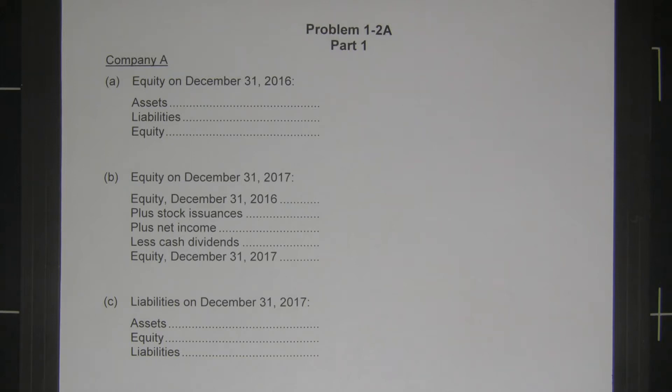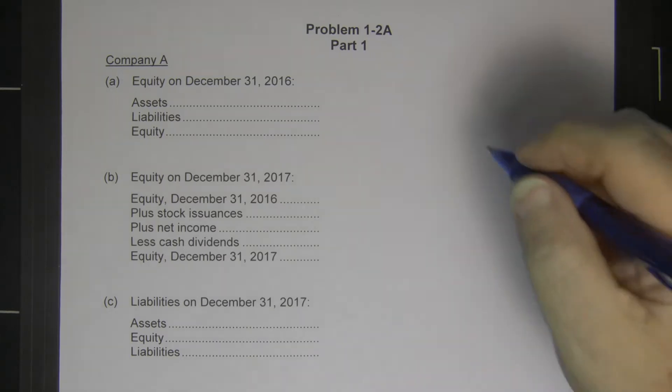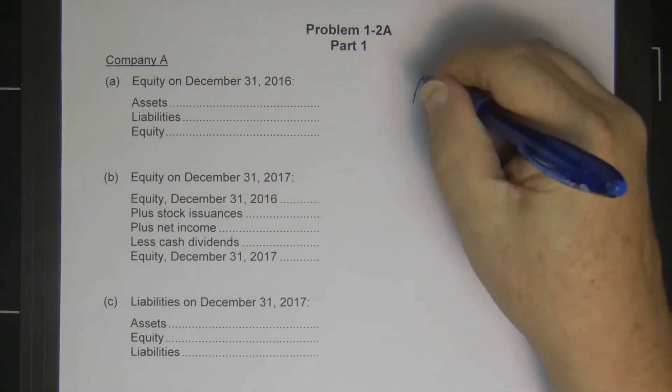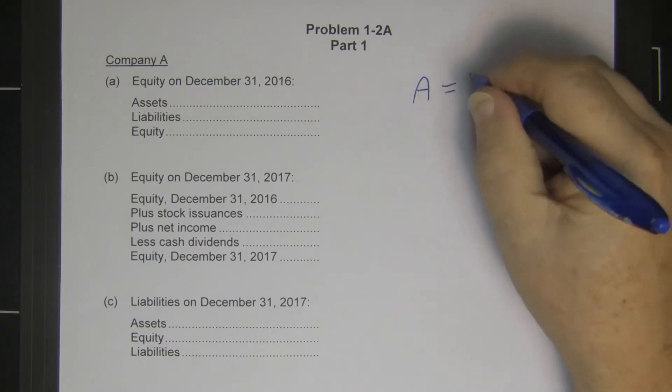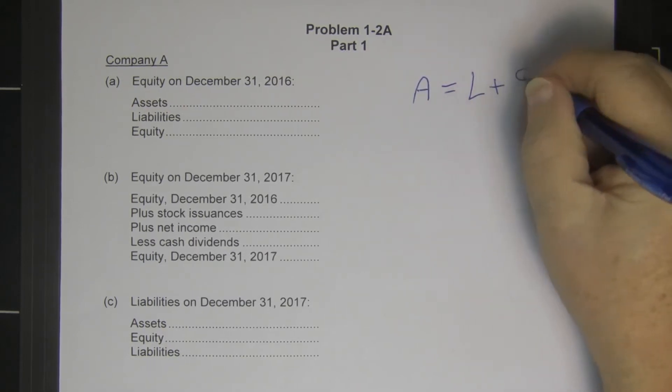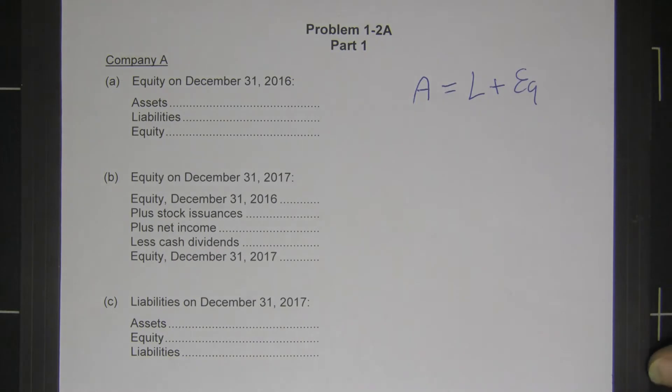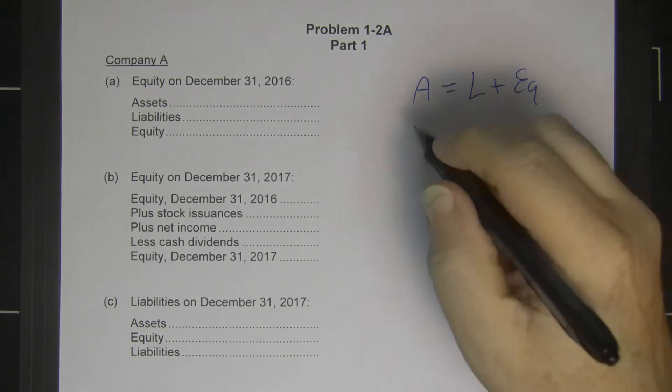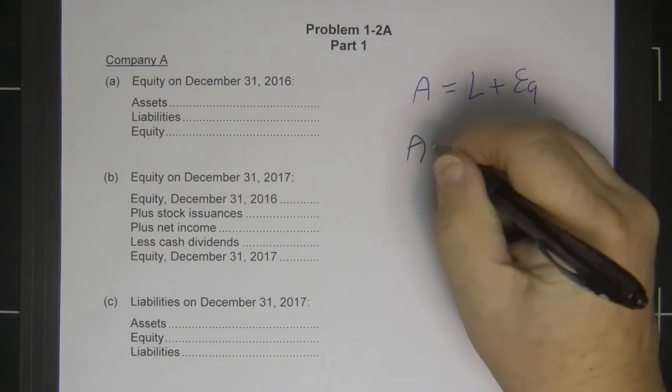Okay, problem 1-2A part 1 asks us to play with the accounting equation. We're starting with the basic accounting equation of assets equal liabilities plus equity, and moving the pieces around so that we also realize that assets minus liabilities equal equity.